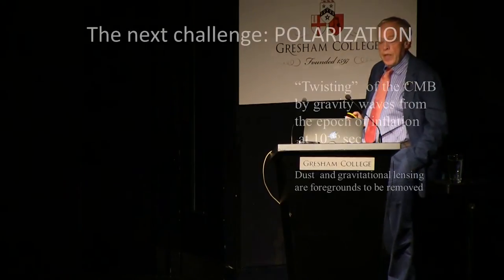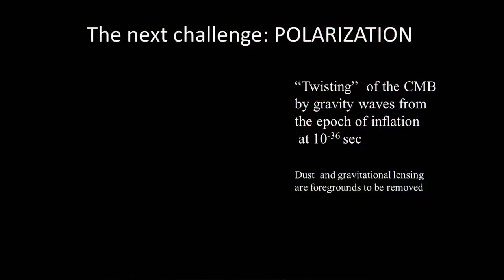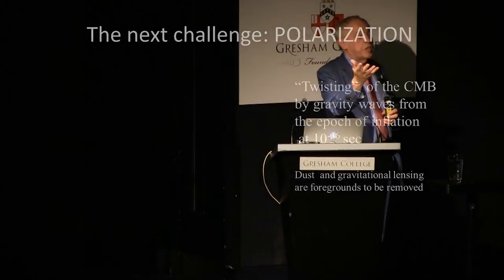Here is the next challenge. You've all experienced this effect of using polarised sunglasses to reduce the glare. Dust reflections basically polarise light, and you can avoid some of the haze from dust by using polarising sunglasses. There's a lot of dust in the Milky Way, and that polarises light too, and the microwave background in particular.